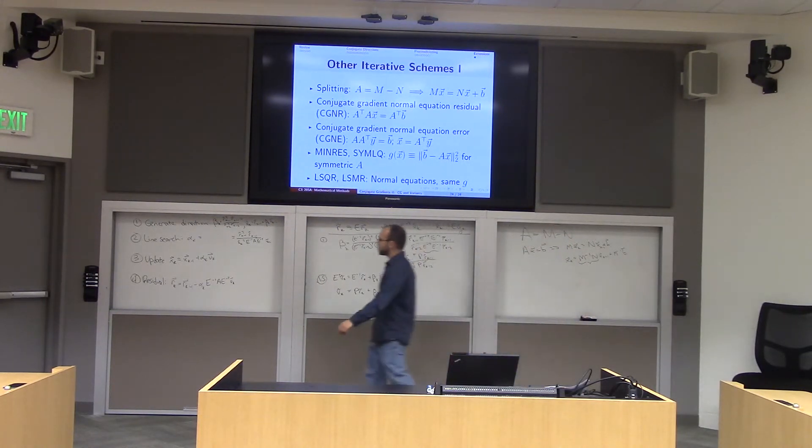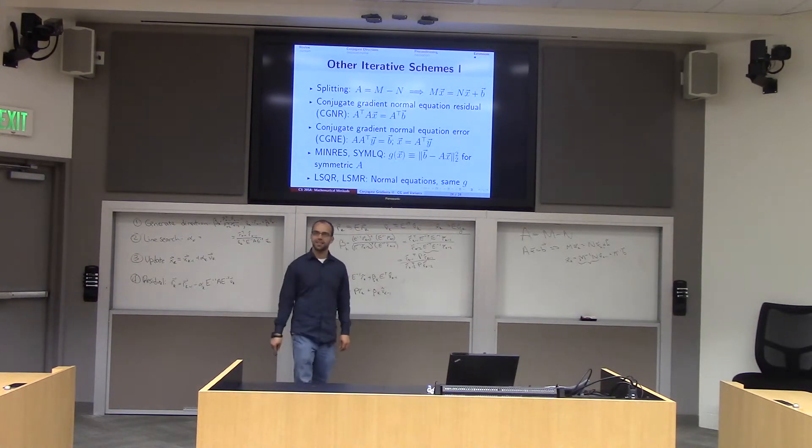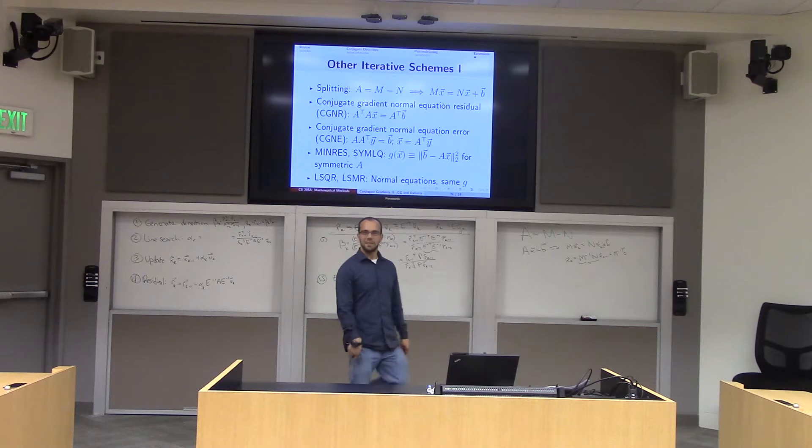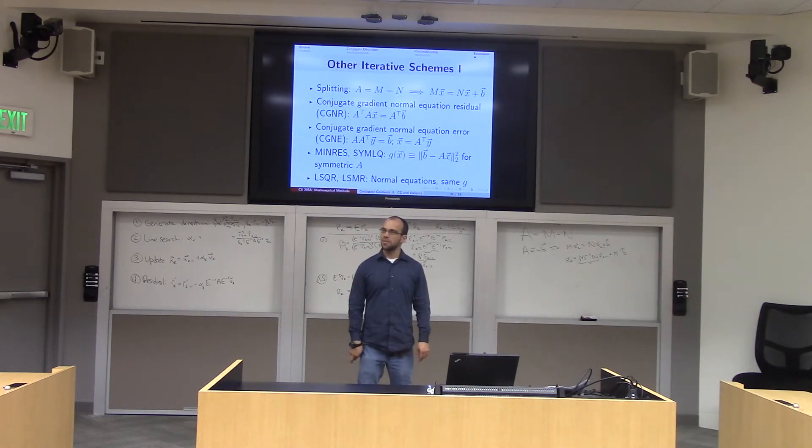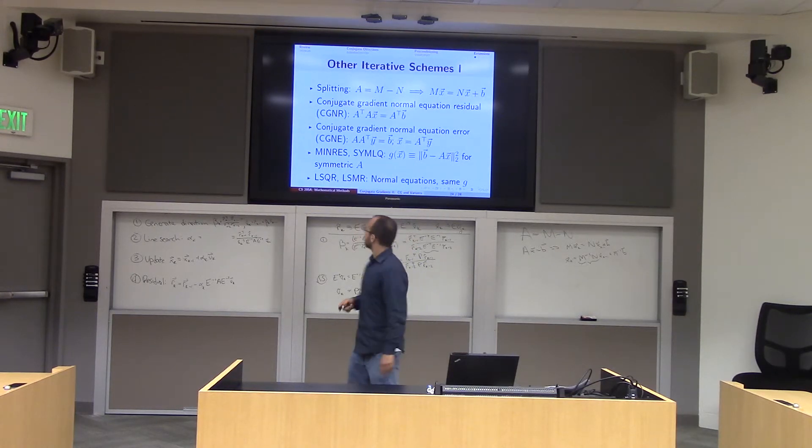And A transpose A is always symmetric and positive definite if A is invertible. And so, what do we do? Well, we just go back into our iterations of CG, and we just substitute A transpose A instead of A. Of course, what do you think happens to convergence in this case? It's really bad. Because when you compute A transpose A, you square the condition number. So, if the convergence of CG was what looks like the square root of your condition number, well, you just lost that square root. So, you're back to, you might as well do gradient descent.